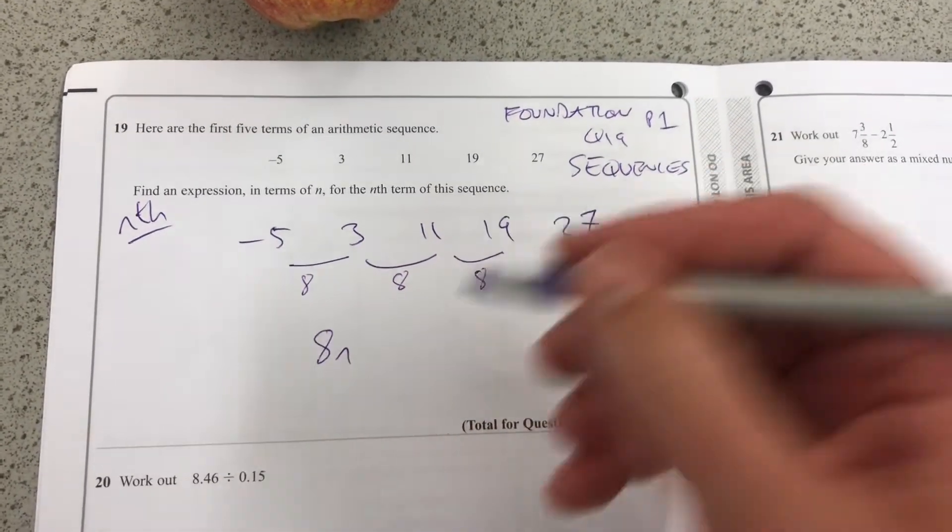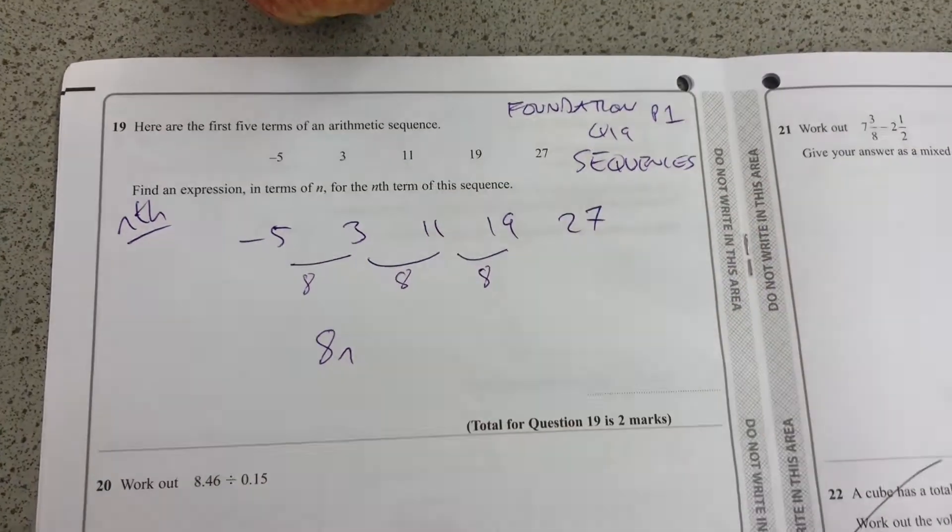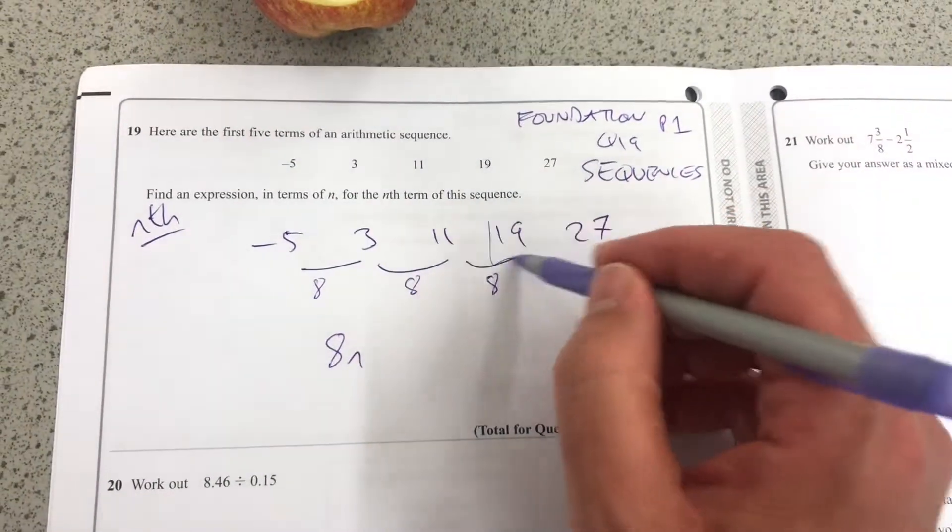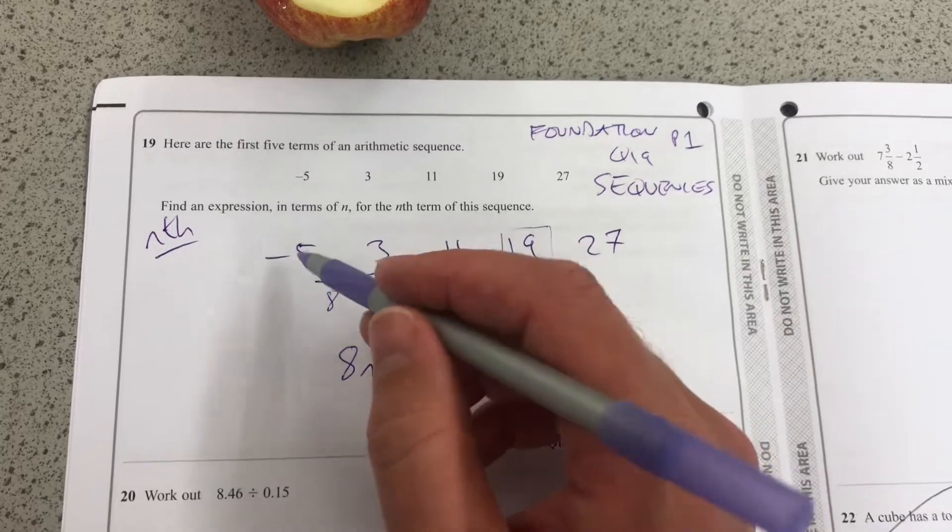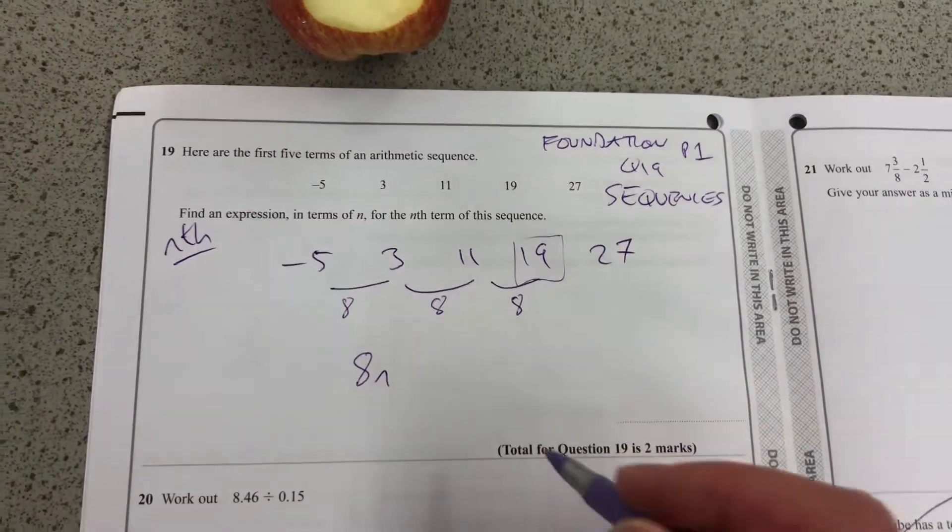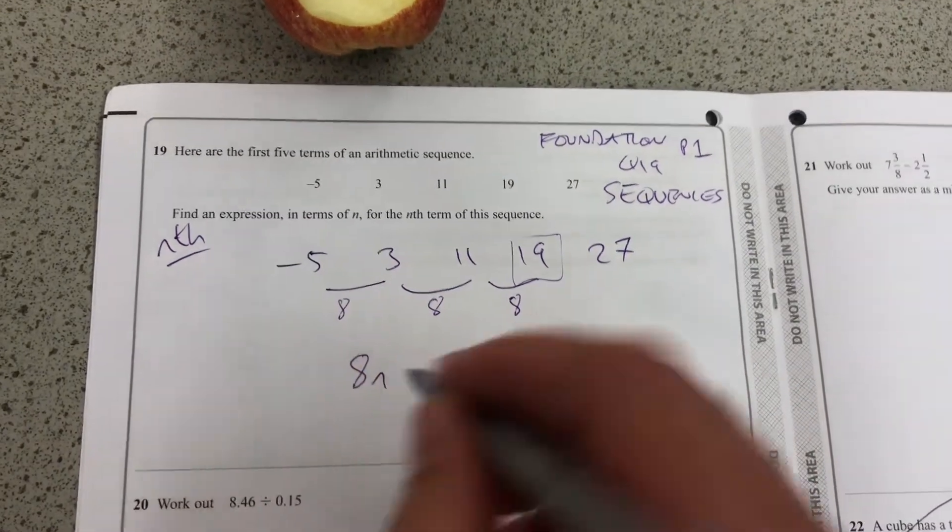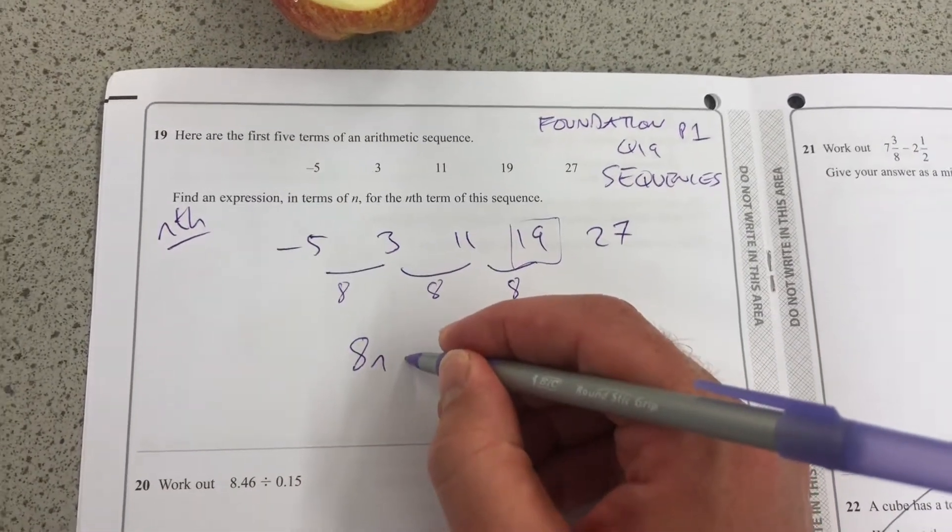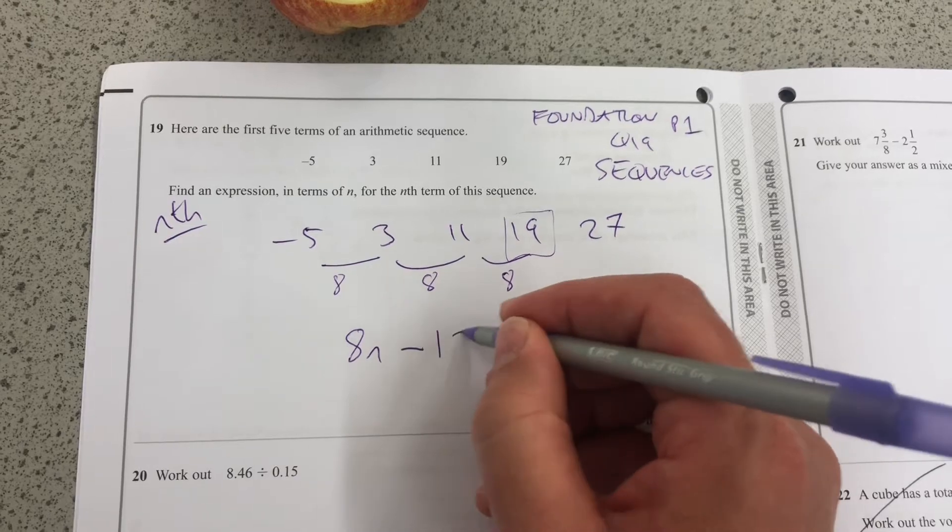So I know it's 8 times the number of terms, but obviously that 4th term is not 32. That's not 8, 16, 24, and so on. So I try and see how do I go from 8 down to minus 5. I would have to subtract the difference between that, which is 13.